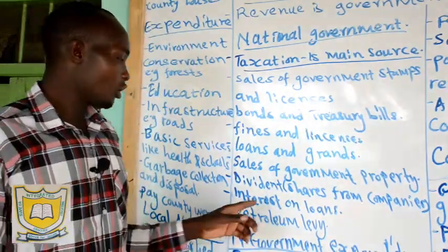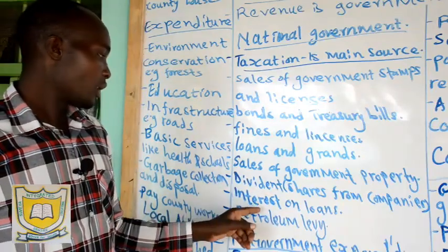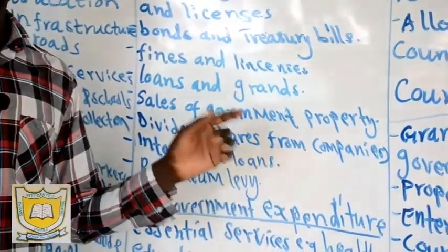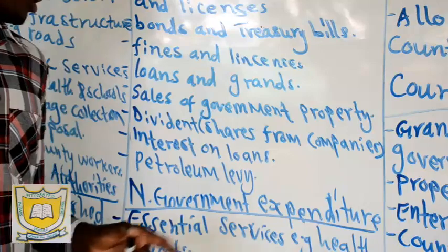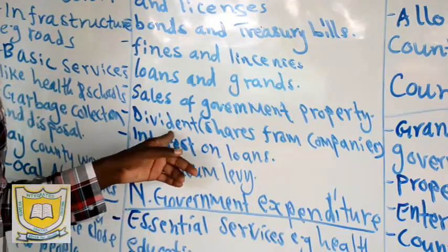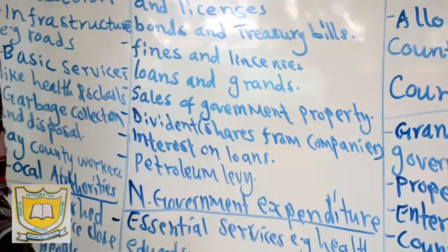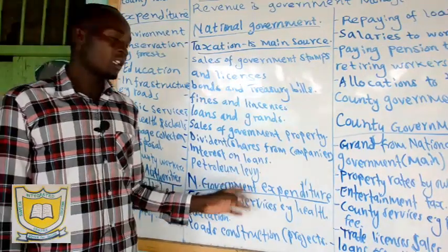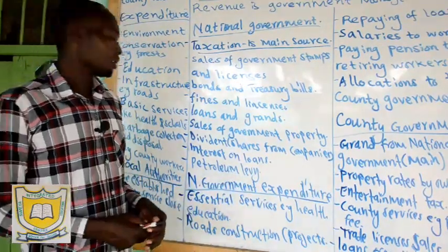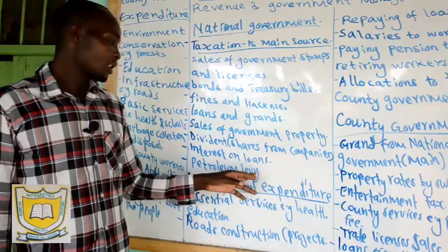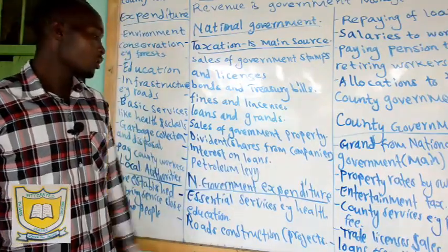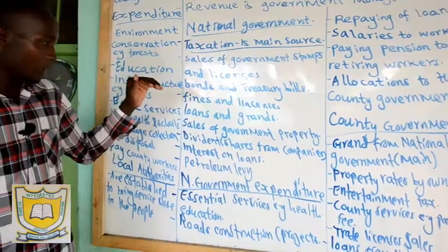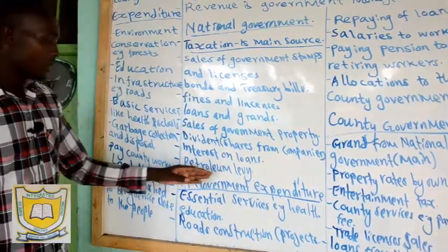We also have interest on loans. The government gives loans to other people, and at the end of the day they need to return those loans with some interest — that is what we are talking about. Then we have petroleum levy: money charged on petroleum products. So that covers the national government revenue sources.